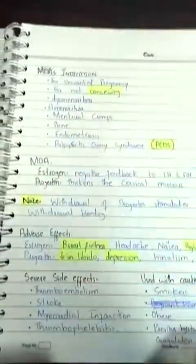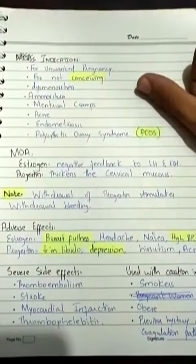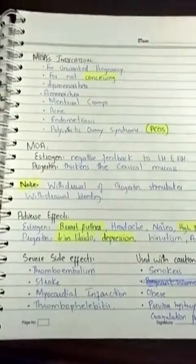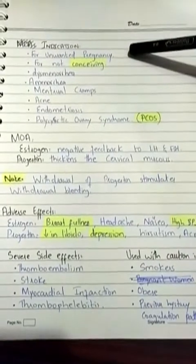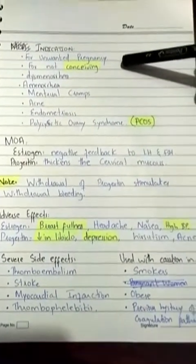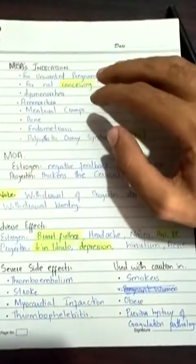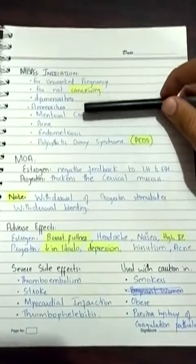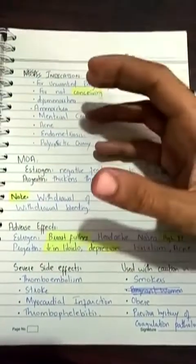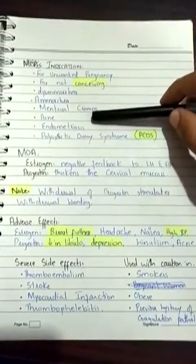Now moving to the pharmacology of contraception. The most common indication is for unwanted pregnancy — the most common use of contraceptives is to prevent conception. Other indications include dysmenorrhea, which means abnormal menstruation; amenorrhea, which means no menstruation at all; and menstrual cramps, which are painful cramps occurring during the menstruation phase.